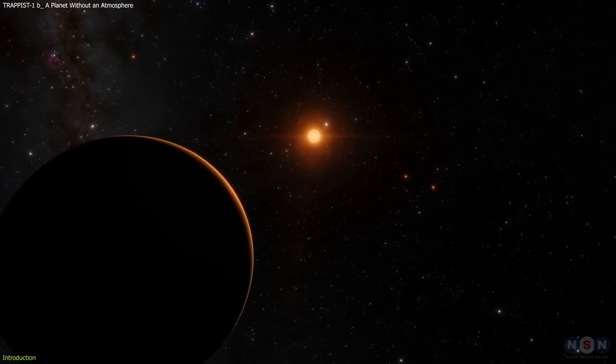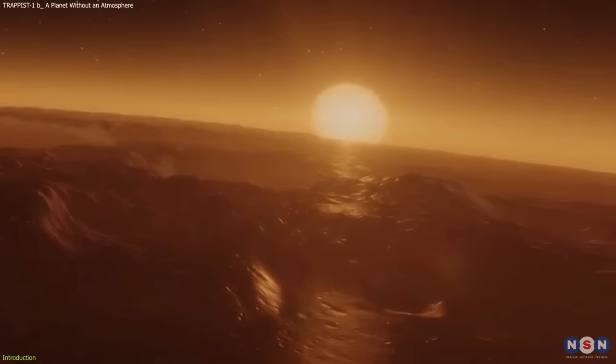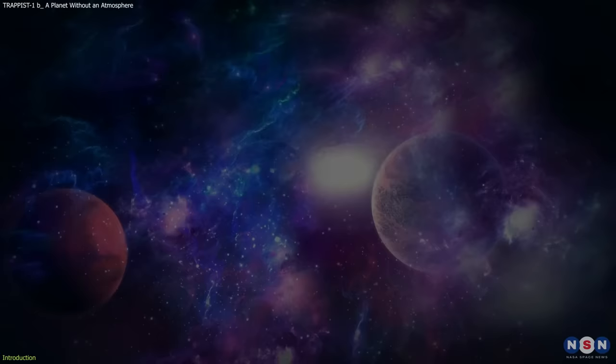Imagine a system of seven Earth-sized planets orbiting a star that is much smaller and cooler than our Sun. A system where some of the planets may have liquid water and even life on their surfaces. This system is only 40 light-years away from us, making it one of the closest and most intriguing exoplanetary systems ever discovered. This is the TRAPPIST-1 system.